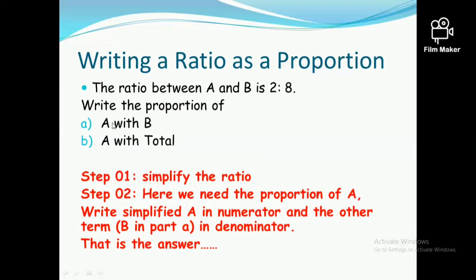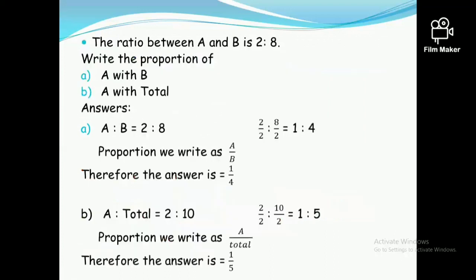How to write this ratio as a proportion? First, simplify the ratio. Then write the simplified number for A in the numerator and B in the denominator. The ratio A to B is 2 to 8. Simplify by dividing both by 2 to get 1 ratio 4. Therefore the proportion of A to B is 1 over 4.